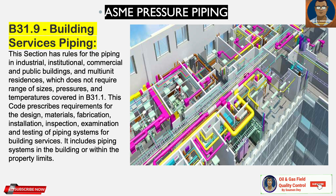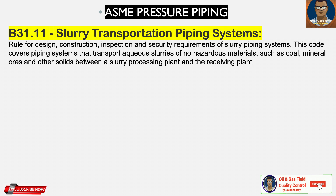B31.9 is for Building Services Piping. This section has rules for piping in industrial, institutional, commercial, and public buildings and multi-unit residences which do not require the range of size, pressures, and temperatures covered in B31.1. B31.11 is for the Slurry Transportation Piping System — rules for design, construction, inspection, and security requirements of slurry piping systems. This code covers piping systems that transport aqueous slurries of non-hazardous materials such as coal, mineral ores, and other solids between a slurry processing plant and receiving plants.